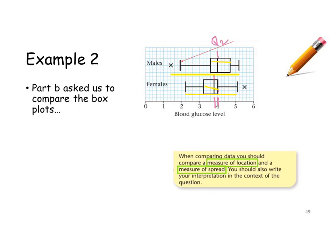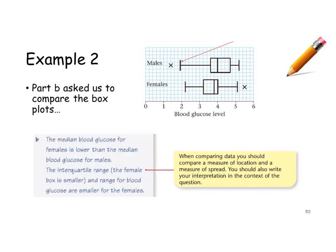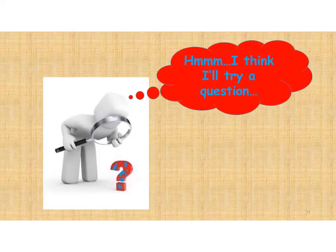Think about measures of location and measures of spread, but put your answers in context of the question. Don't just talk about numbers — talk about, in this case, blood glucose. The median blood glucose for the females is lower than the median blood glucose for the males. The female has a smaller interquartile range box than the males, and the range of blood glucose is also smaller for the females, meaning there is less variety in the female blood glucose than the male blood glucose. Now try the question.